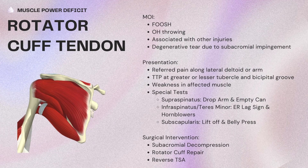Rotator cuff tendon mechanism of injury is falling on an outstretched hand, overhead throwing associated with other injuries, or it could be a degenerative tear due to subacromial impingement. The presentation for rotator cuff tendon pathology is referred pain along the lateral deltoid or arm, tender to palpate at the greater or lesser tubercle and bicipital groove — all those attachment sites of the different rotator cuff muscles — with weakness in the muscles that are affected. Special tests are broken down by muscle: supraspinatus uses the drop arm and empty can test; infraspinatus and teres minor use the ER lag sign and horn blower's; subscapularis uses the lift-off and belly press.